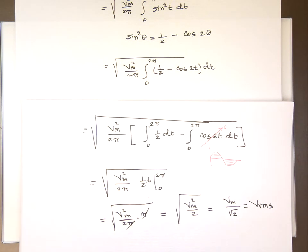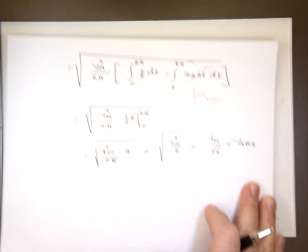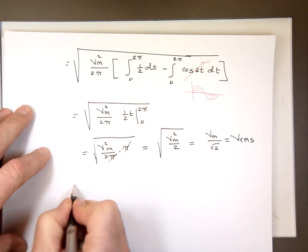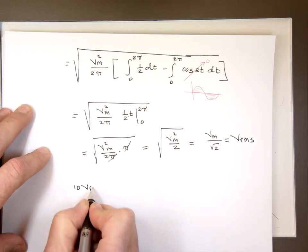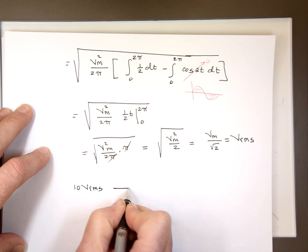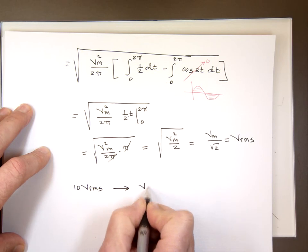So if you want to convert from RMS, for example, if we say we have a 10 volt RMS value, and they're asking you, what is the average, V average, V DC, what is that going to be?